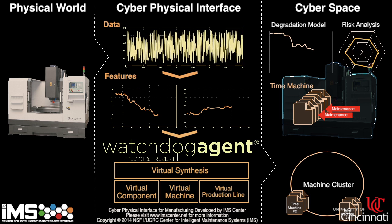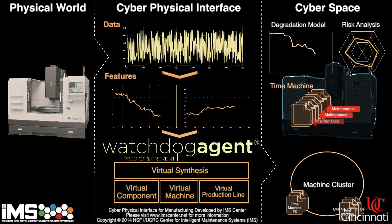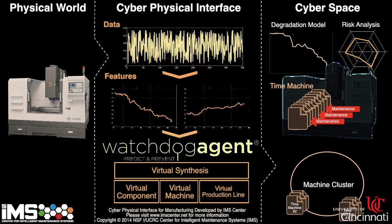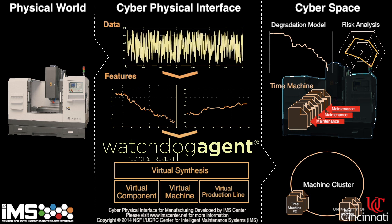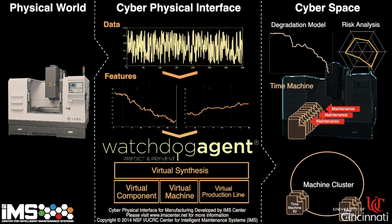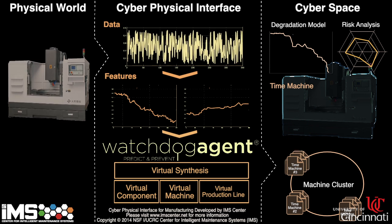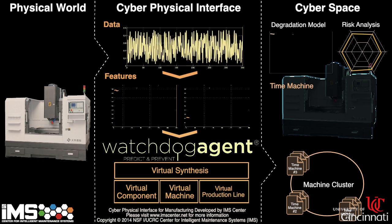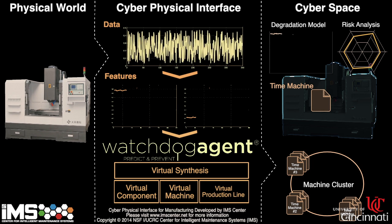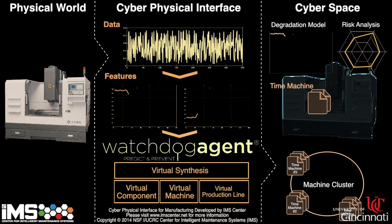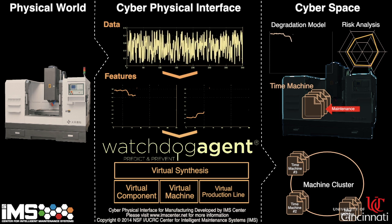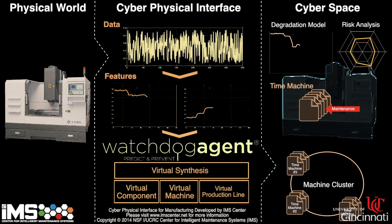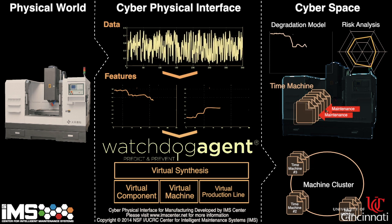It creates a time-based variation detection system. Once it detects different steps with different degradation levels, it can cluster them into one cluster and store that in the machine memory. Later, the user can go back to find out what happened, and also use this to predict what will happen.